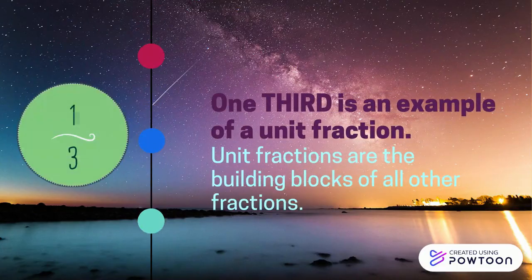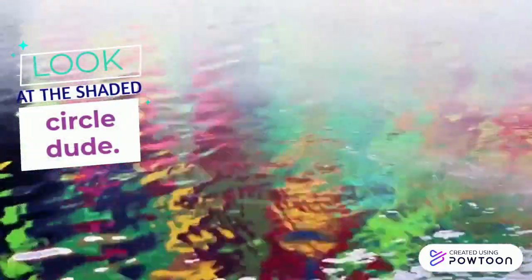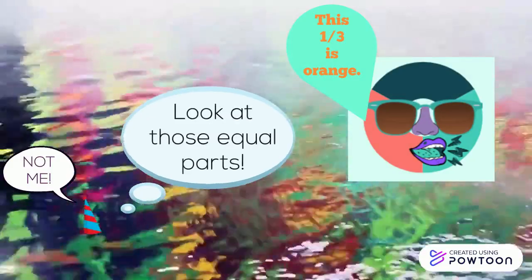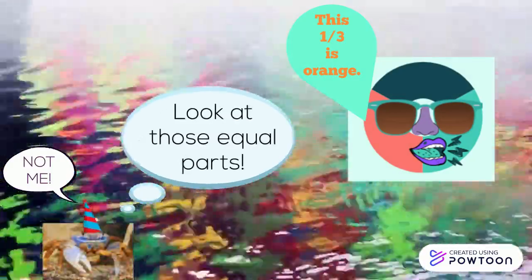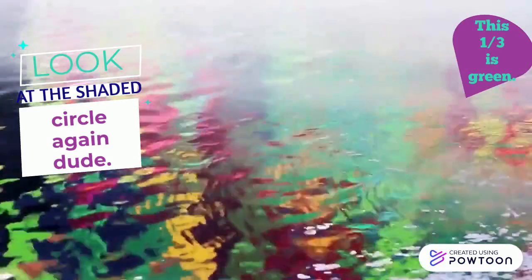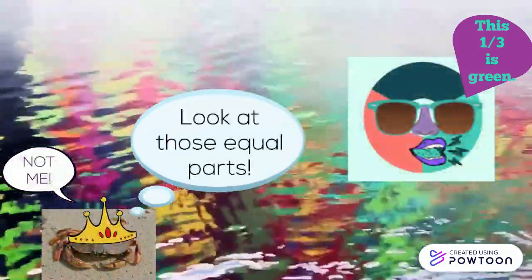One third is an example of a unit fraction. Unit fractions are the building blocks of all other fractions. Look at the shaded circle — this one third is orange. Look at the shaded circle again — this one third is green.